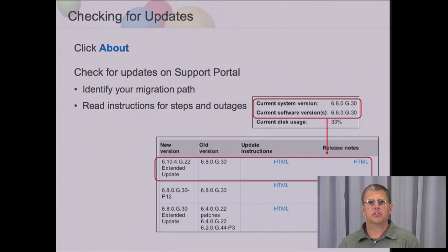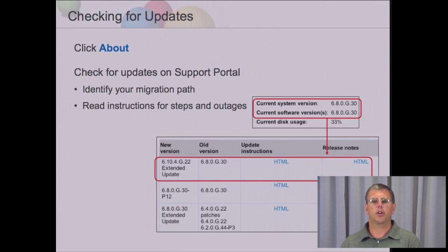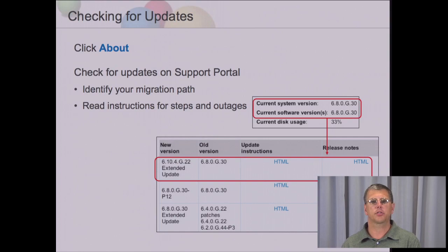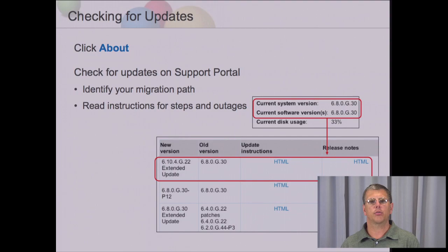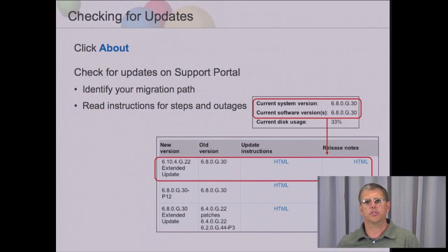The search appliance has software on it that gets updated periodically. We post those software updates to our support portal. You'll have to log in there and download the software and install it on the search appliance when the updates become available. The reason for this is the search appliance is sitting behind your firewall — we don't have access to your servers behind your firewall, so you'll have to make the request to get the software and download it.